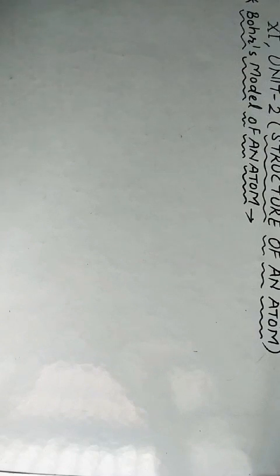Rutherford was not able to explain the stability of the atom — this is explained in Bohr's model. Second, the electromagnetic spectrum, atomic spectrum, and line spectrum of hydrogen are also explained on the basis of Bohr's model.